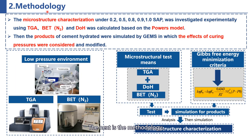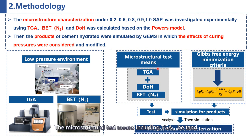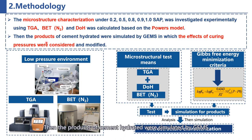The next is the methodology. This study compared test and simulation. The microstructure test methods including thermogravimetric analysis and BET, and the degree of hydration was calculated based on Powers' model. Then, the products of cement hydration were simulated by GEMS, in which the effects of curing pressures were considered and modified.